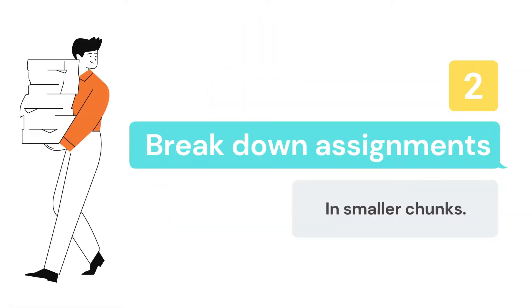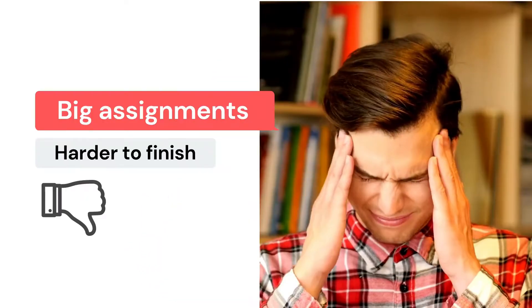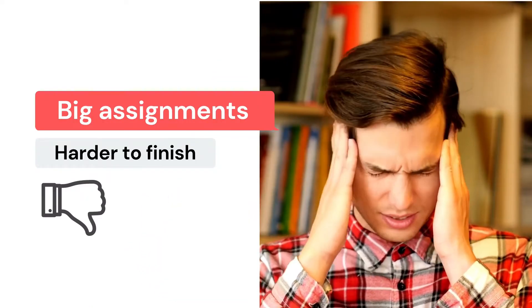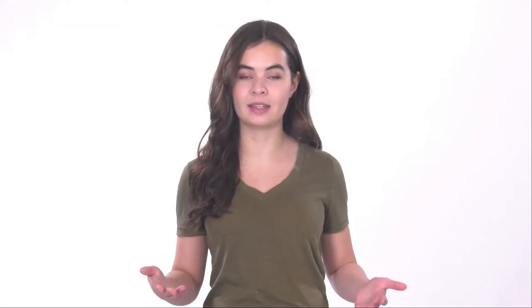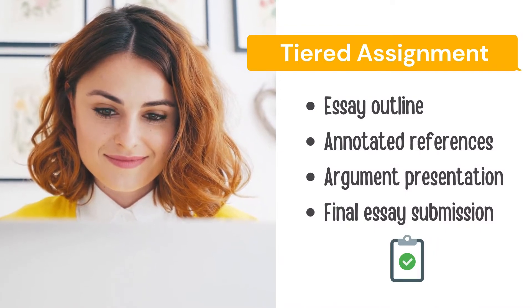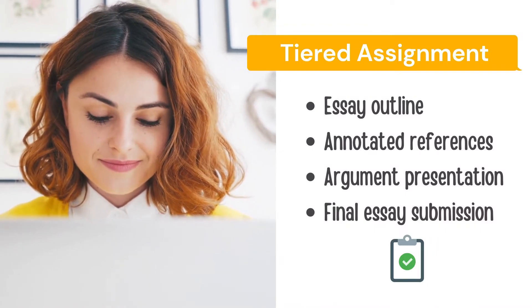Second, break down assignments. If you use smaller chunks that add up to the final mark, reducing plagiarism becomes easier. For example, an essay could be split into an essay outline, references with notes, a presentation, and then the final submission. This way, different aspects can be evaluated, like understanding of the topic, researchability, and presentation skills. Otherwise, there could be cases of last-minute copy-pasting or purchasing essays.